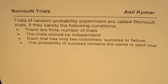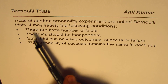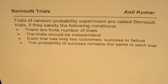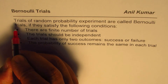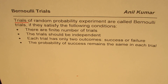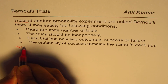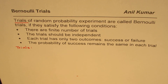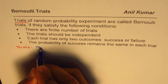So if any probability experiment satisfies all these four conditions, we say it meets the criteria for Bernoulli's trials. Now based on this we'll be working on distributions and so many things, so it becomes very important for us to understand this concept. Let's try to figure out each term. The first term is: what is a trial? Trials of a random probability experiment means that a trial is basically a repetition of an experiment.